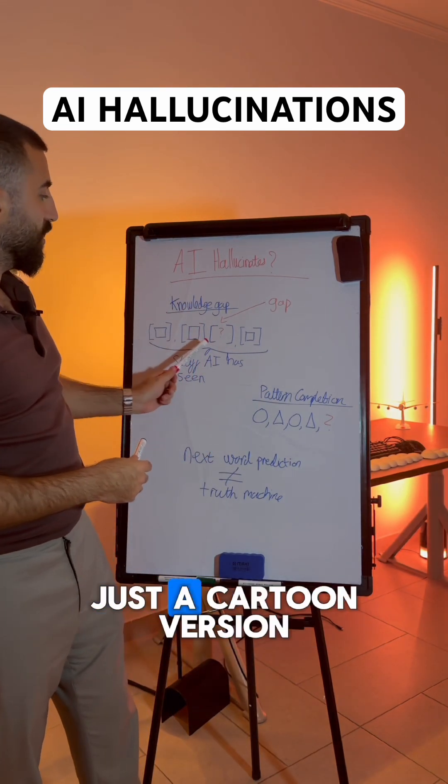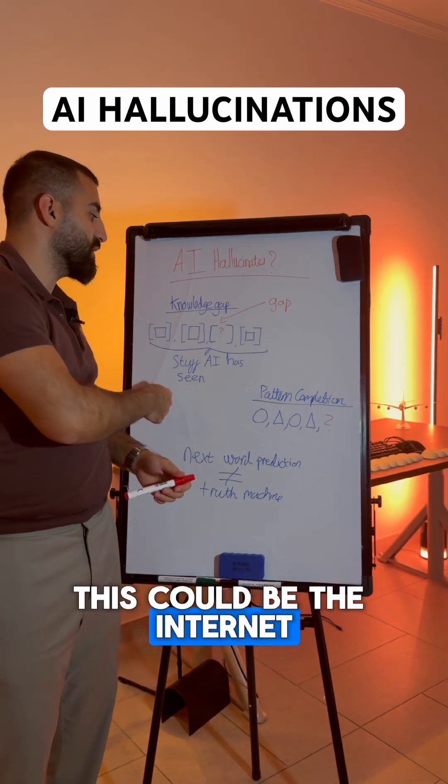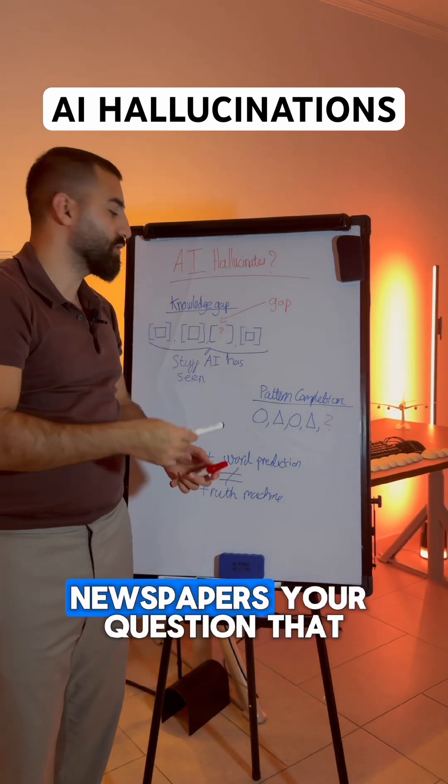So this image is just a cartoon version of what the AI is taught on. This could be internet text, audio, books, newspapers.